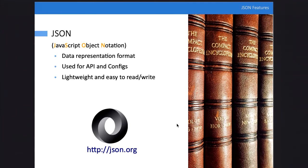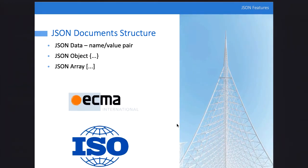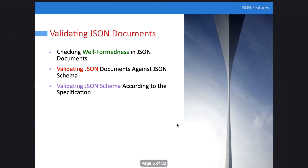JSON is used a lot with APIs and in JavaScript environments because it's easier to read and write. The JSON structure is simple — you have property values, objects, and arrays that group different properties and values of JSON documents.